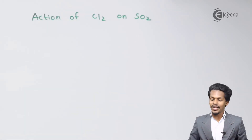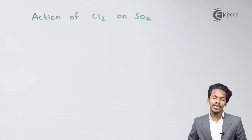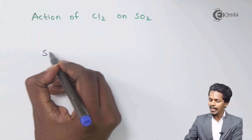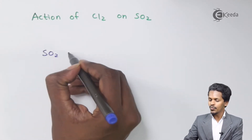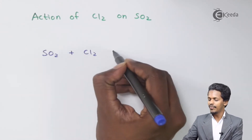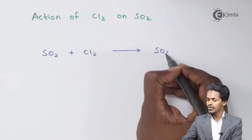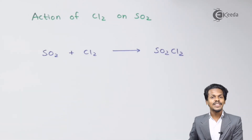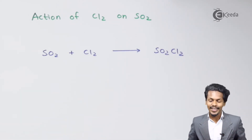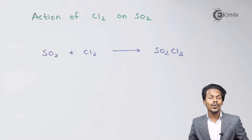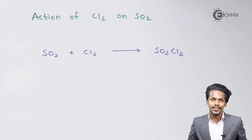The next chemical reaction is the action of Cl2 on SO2. Whenever sulfur dioxide is treated with Cl2, it forms SO2Cl2, which is known as sulfuryl chloride. This is the second reaction.